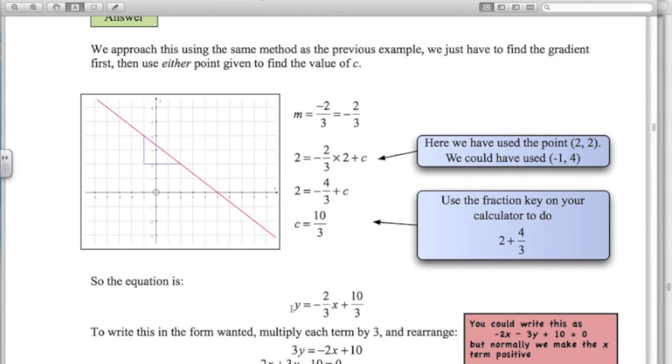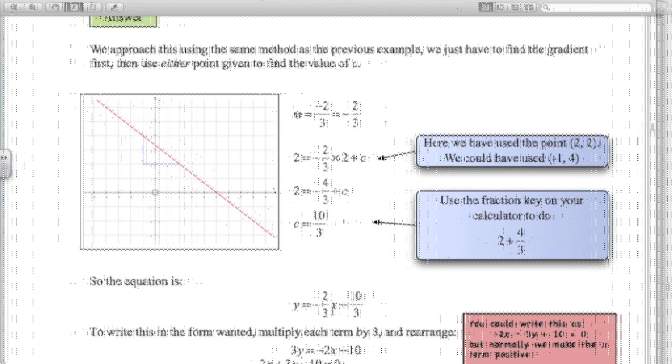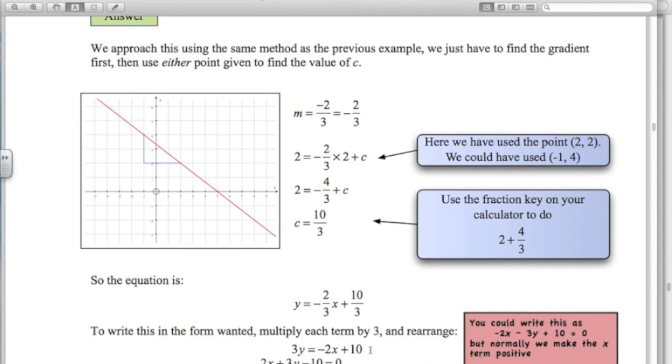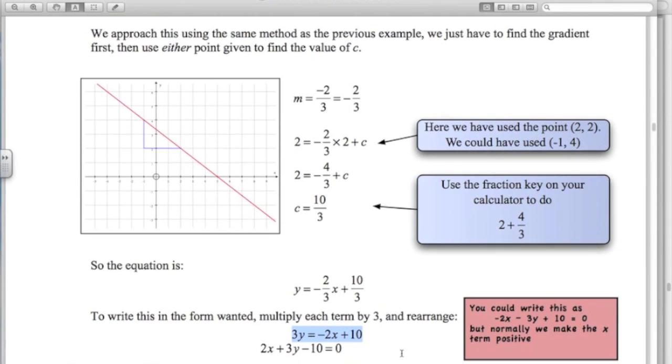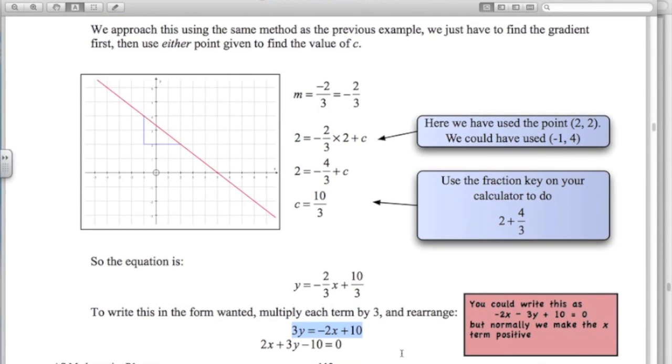Multiply everything by 3. So times this by 3, this by 3, and this by 3. We get this here. And then just put everything over to the left-hand side. So 2X plus 3Y minus 10 equals 0. And that's done.